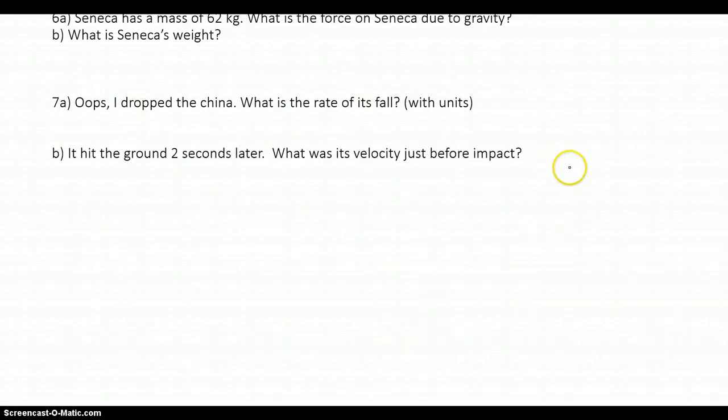Here we have Seneca that has a mass of 62 kilograms. What is the force due to gravity? Well this is going back to what we did in class. We know that mass times gravitational acceleration equals weight. So in this case it is the classic scenario of Fg equals mg.